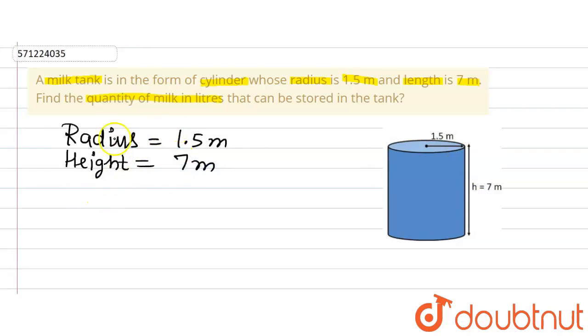The volume is what we are supposed to find out. So the formula that we are going to use is: volume of cylinder equals π r² h, where r and h are radius and height of the cylinder.